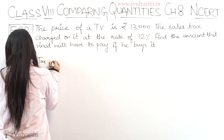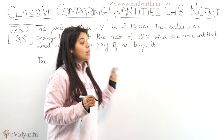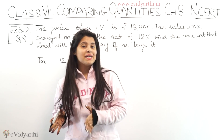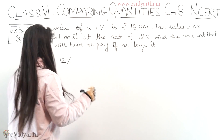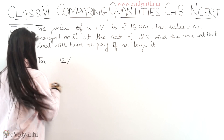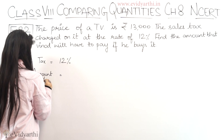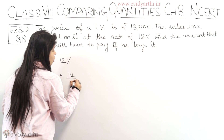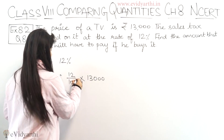So the price of the TV is 13,000. The tax will be calculated on the price. So the amount of tax will be 12% of 13,000.